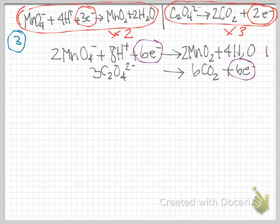And then everything by three for our right half reaction. We look, we have six electrons in each, they're on opposite sides. So we did good.